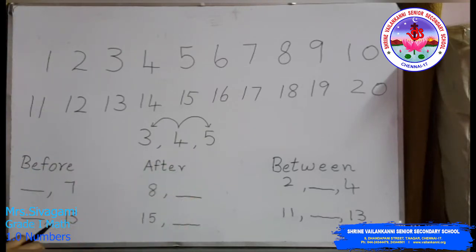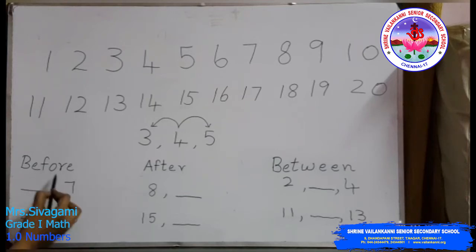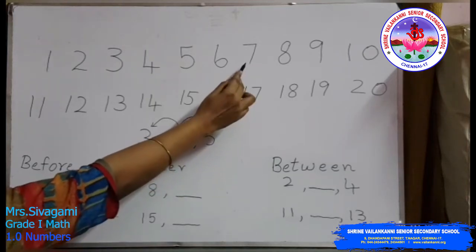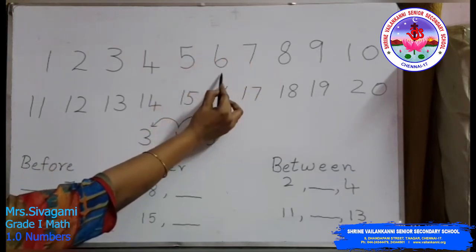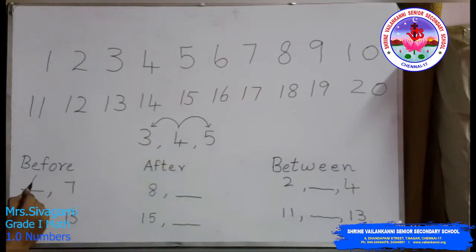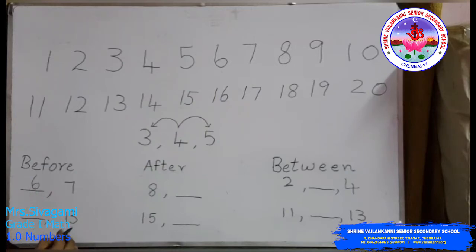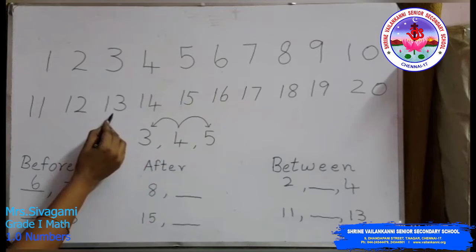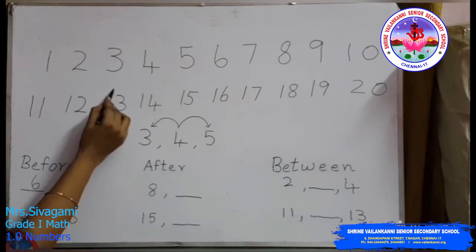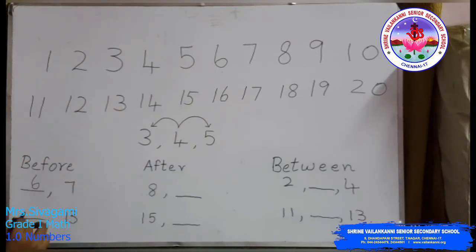So with a few examples we can see the before, after, and between numbers. Before number seven — we have to find the number which comes before seven, so the answer is six. Next, we will find the number before 13: the number before 13 is 12.